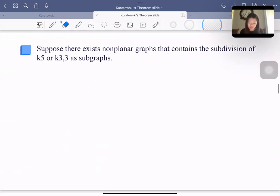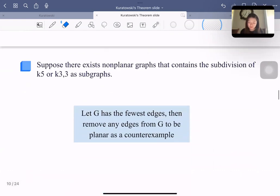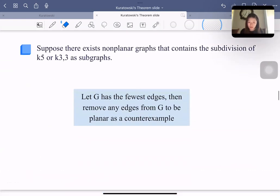The second direction, we suppose there is this non-planar graph that contains the subdivision of K5 or K3,3 as subgraphs. So in this direction, we try to prove it by contradiction. First, we let G has the fewest edges, and we remove any edges from G to get planar graph as a counterexample.